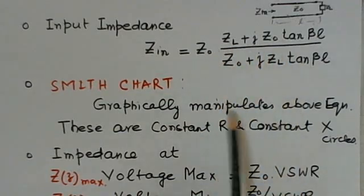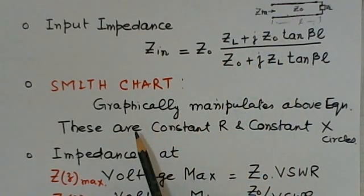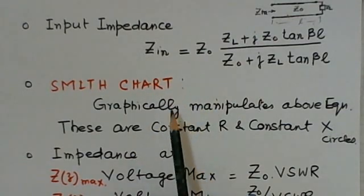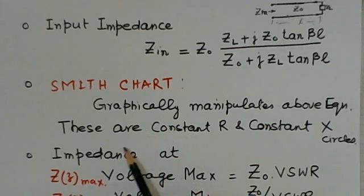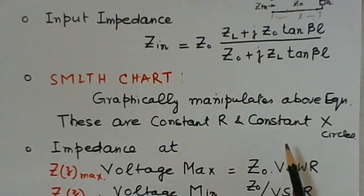Since this relation is quite complex, it is better to find out the input impedances by a chart, in the form of a chart, the Smith chart. Basically, it gives a graphical manipulation of the equations, and the Smith chart is basically constant R and constant reactance circles.